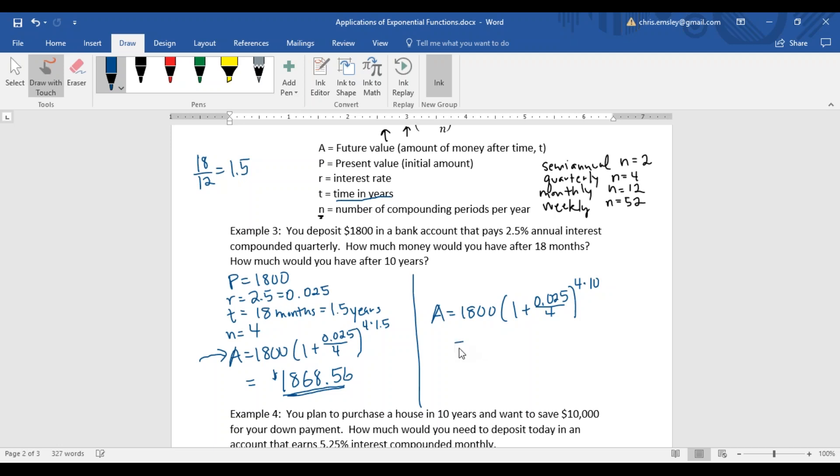Same calculator work as before. Make sure you plug that in carefully with your formula, and you should get $2,309.45.